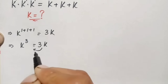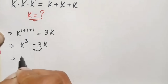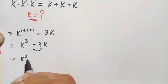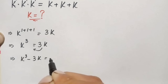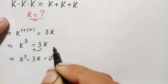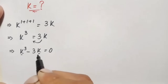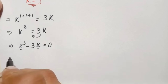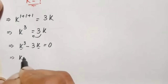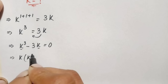So we have k cubed equals 3k. Next, we move 3k to the left hand side, making it negative 3k. This equation becomes k cubed minus 3k is equal to zero.